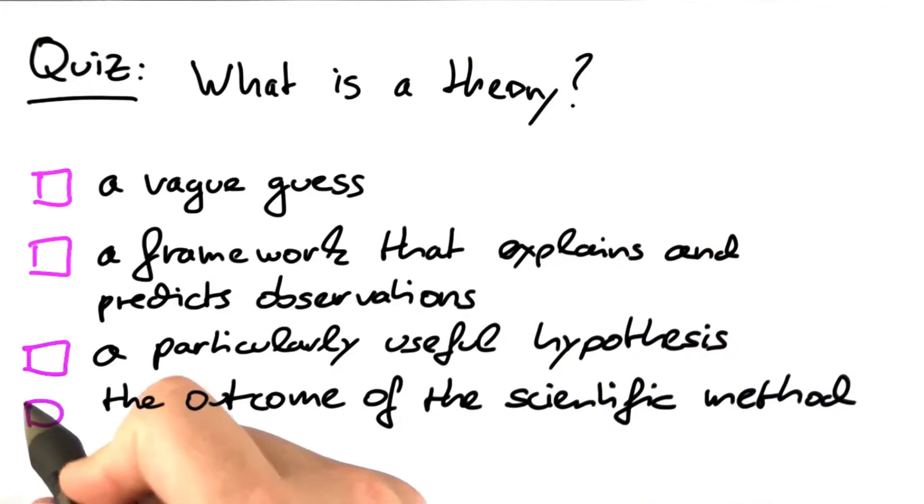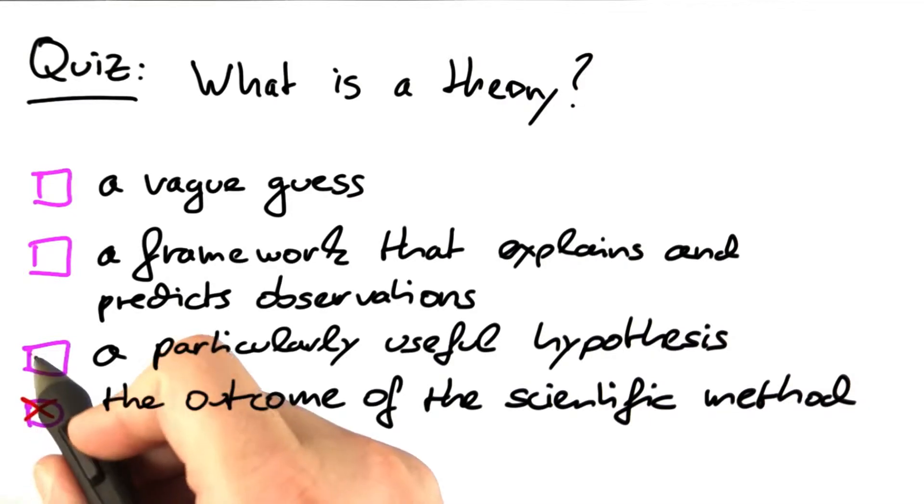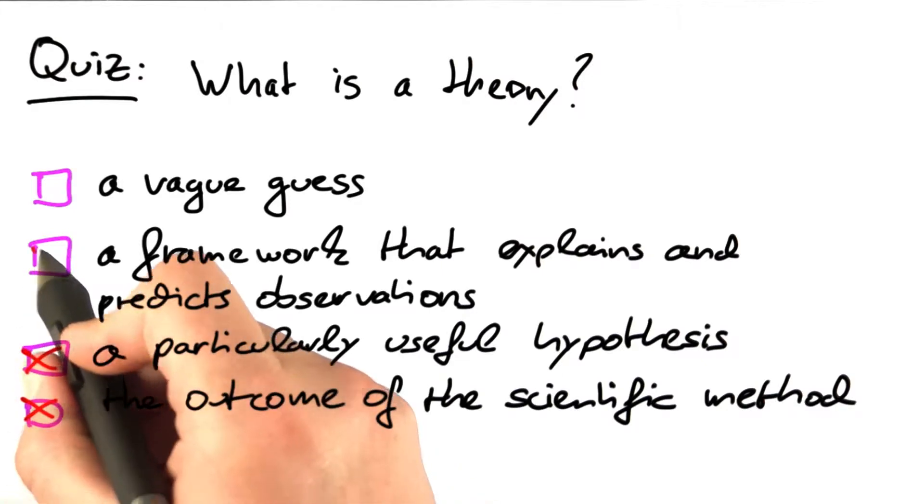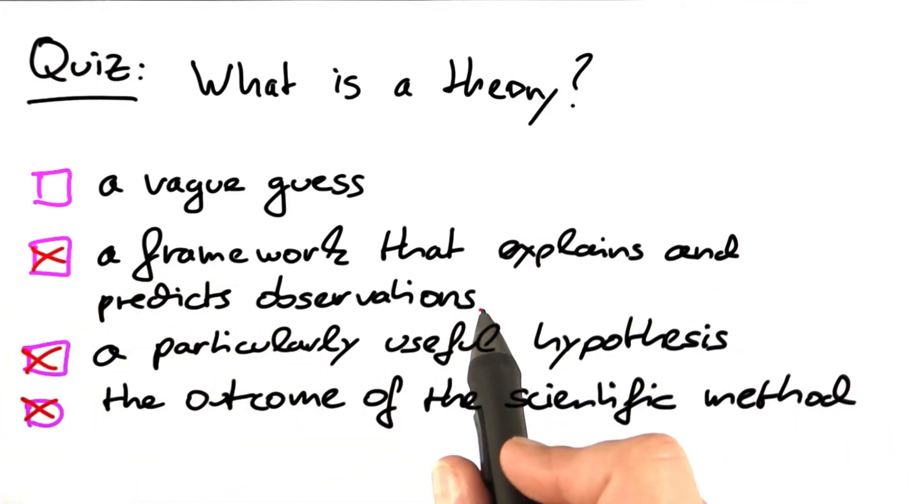Now, for the answers. A theory is the outcome of the scientific method. A theory is also a particularly useful hypothesis because we refine the hypothesis until it becomes a theory, and it also is a framework that explains and predicts observations. This is the official definition of theory.